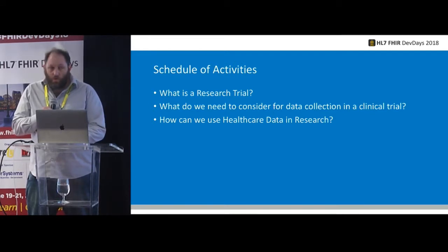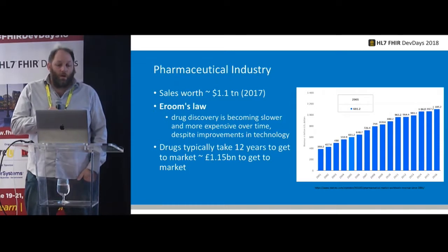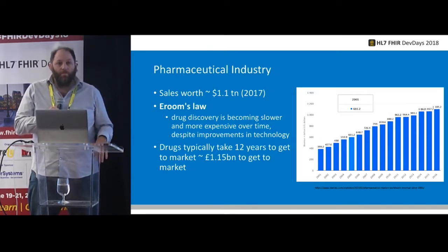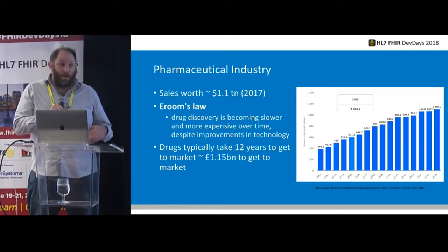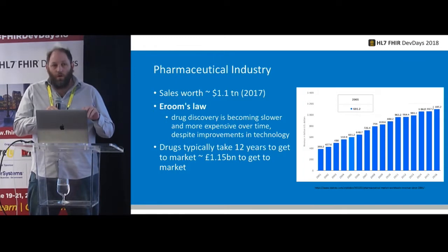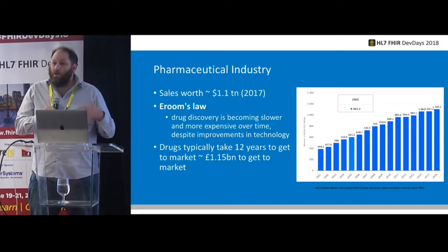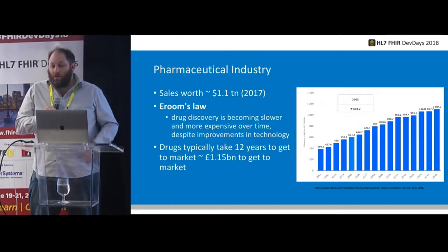As background, the pharmaceutical industry is quite large — sales around 1.1 trillion in 2017, just in the US. One of the things that comes with that is you need to get drugs into the hands of people. What we're discovering is it's actually getting more and more expensive to get a drug to market, which is counter to what you'd expect given improvements in data collection and machine learning — but still, it's costing more and more.